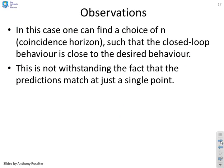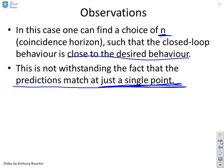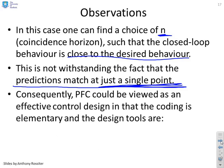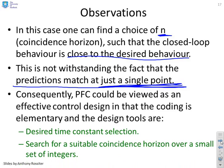So observations. We can find a choice of n, here we showed 3, such that the closed loop behavior is close to the desired behavior. And this is notwithstanding the fact that all we did was match predictions at a single point. It was a very, very simple strategy. And yet it seems to be effective. Consequently, PFC could be viewed as an effective control design, in that the coding is elementary, and the only design tools were, what's my desired time constant? And I then have to do, and this is the keyword, a search for suitable coincidence horizons over a small set of integers. So I just did 3, 5 and 8 and said, look, 3 seems to be best. In general, you might want to search over a few more, but you will usually find a reasonable answer.